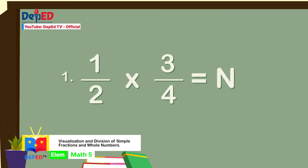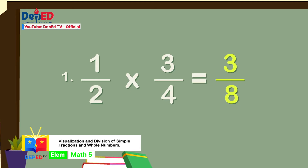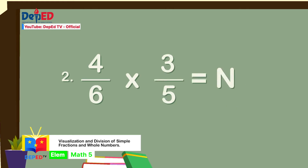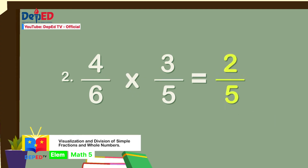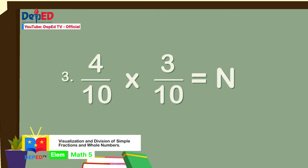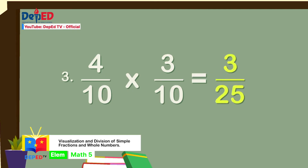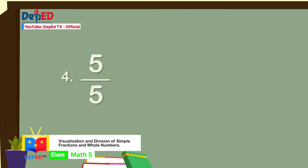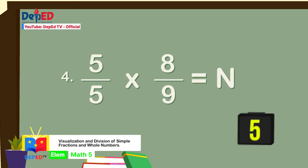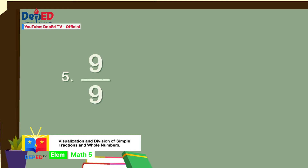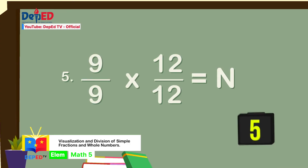Hello, Math Heroes! 1 half times 3 fourths equals N. The answer is 3 eighths! Number 2: 4 sixths times 3 fifths equals N. The answer is 2 fifths! Number 3: 4 tenths times 3 tenths equals N. The answer is 3 over 25. Number 4: 5 over 5 times 8 over 9 equals N. The answer is 8 over 9. Number 5: 9 over 9 times 12 over 12 equals N. The answer is 1.